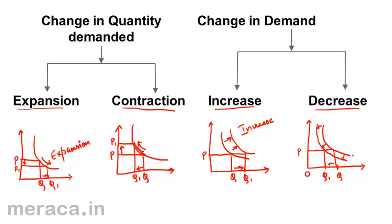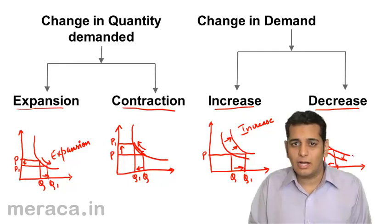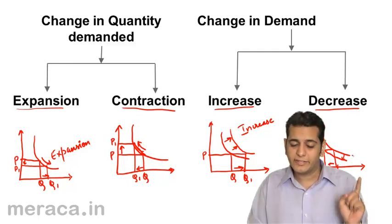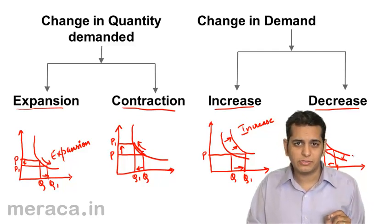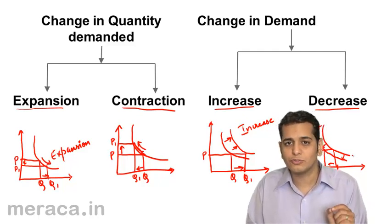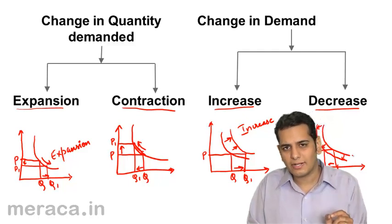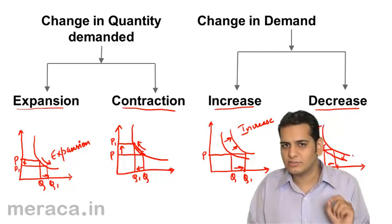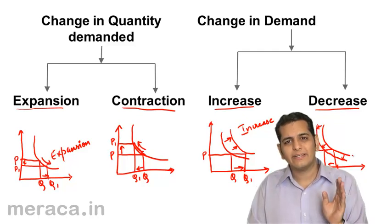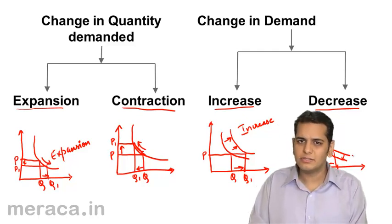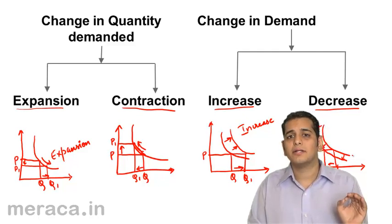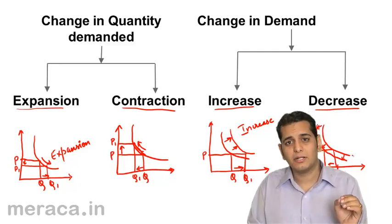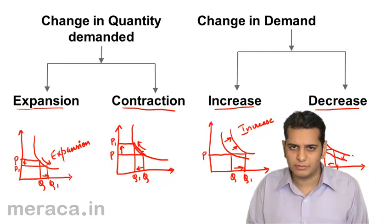To summarize: expansion and contraction are due to change in price — expansion is because of a fall in price, and contraction is because of a rise in price. However, increase in demand and decrease in demand are not related to price but are related to other factors. Demand changes because of a change in these other factors.